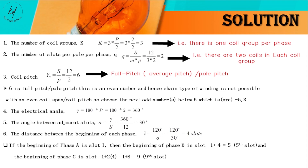If you proceed and multiply 4, which is the distance between the beginning of each phase, by 3 and add 1, you get 13. This indicates that the first slot is terminated, confirming the cycle is complete.